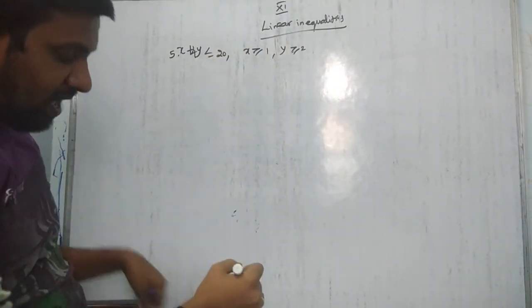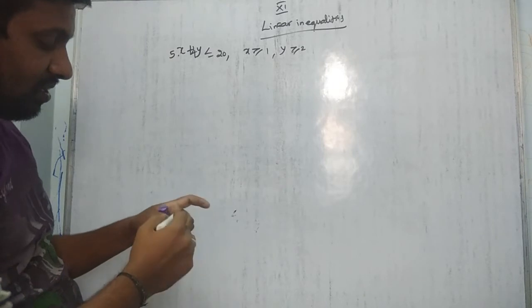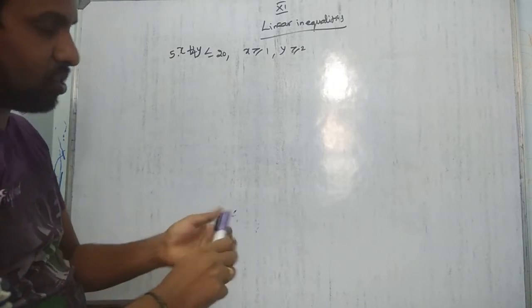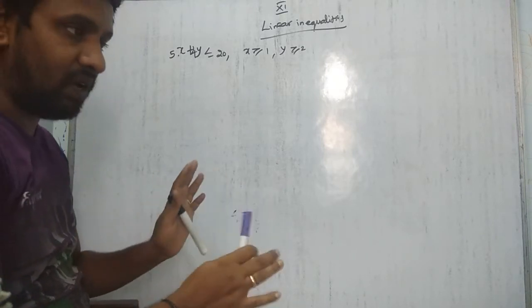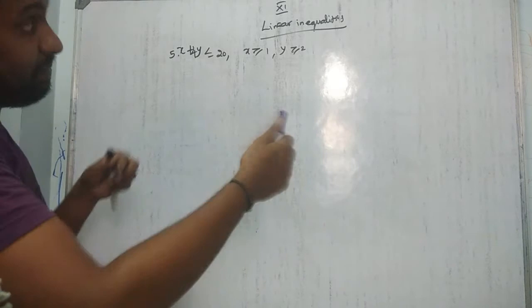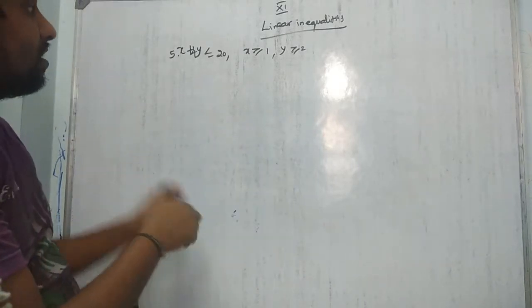We need to draw the graph and find the feasible, bounded, closed region — these three terms mean the same thing. This is class 11 content, but the graphing concept carries into class 12 as well.